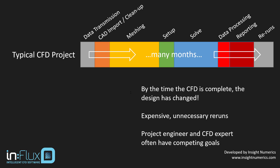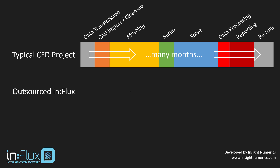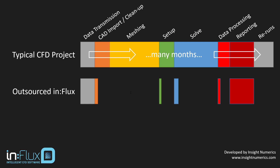If the same project was outsourced using Influx, the data transmission task remains the same, but the CAD import is often very easy, meshing is entirely automated, setup is as easy if not easier than setting up a dispersion run in FAST, and the solution process is very quick and does not require any scripting. The data processing tasks have all been automated, and after the reporting phase, there will be fewer requirements for reruns simply because the project is finished so much quicker.